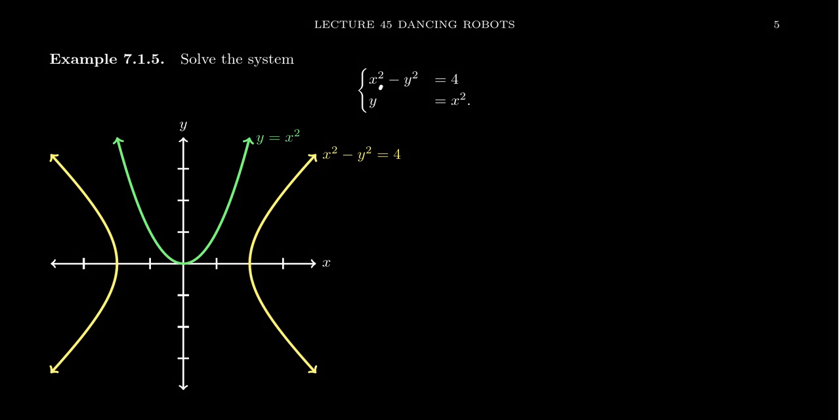So notice here, we have the equation x squared minus y squared equals 4, which is actually a hyperbola that you see here on the screen. And then also the equation y equals x squared, that's your standard parabola, which you can see right here.